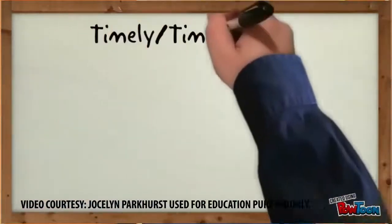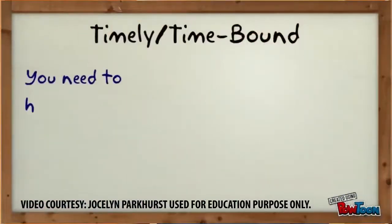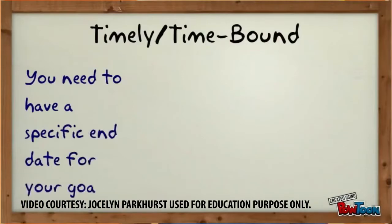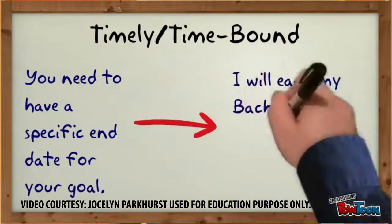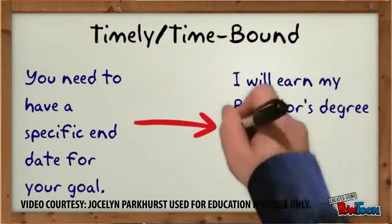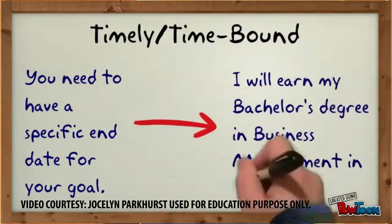The last one is time bound — you need to have a specific end date for your goal. An example: I will earn my bachelor's degree in business management in four years.